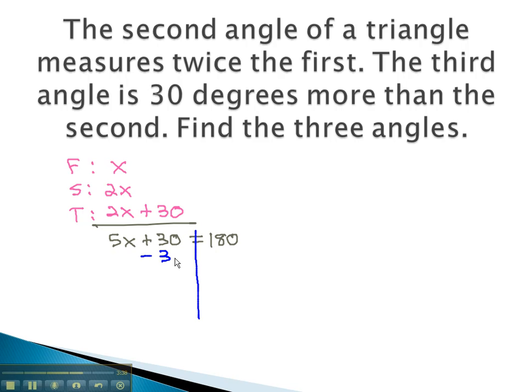Solving the equation, we subtract 30 from both sides. We now have 5x equals 150. Finally, to get the x alone, we divide both sides by 5, and find out x is equal to 30.